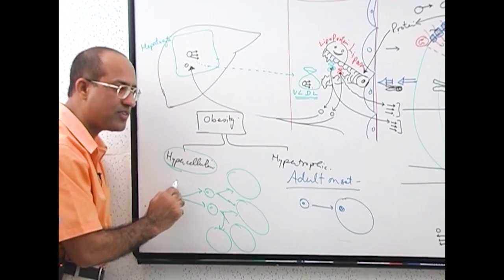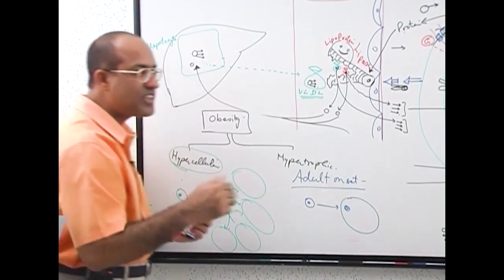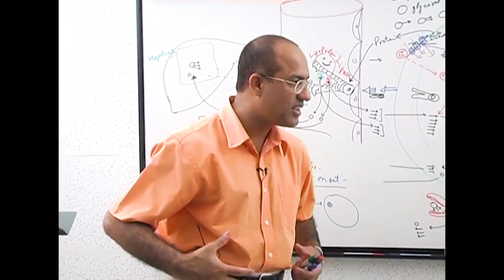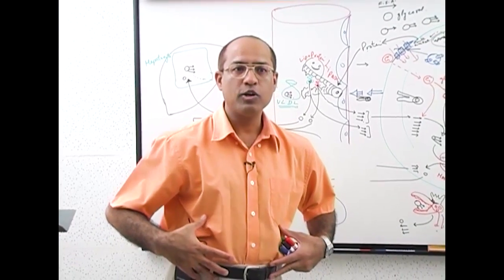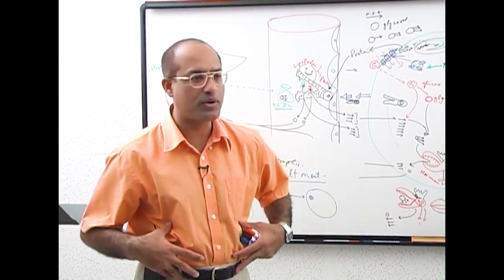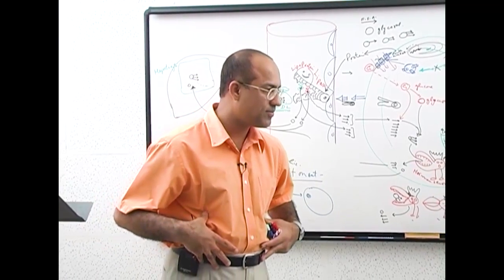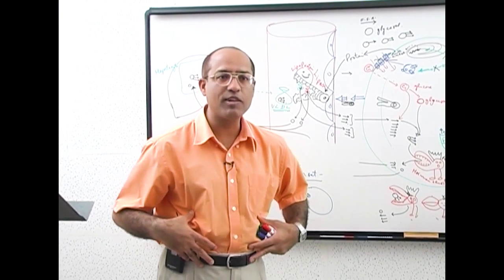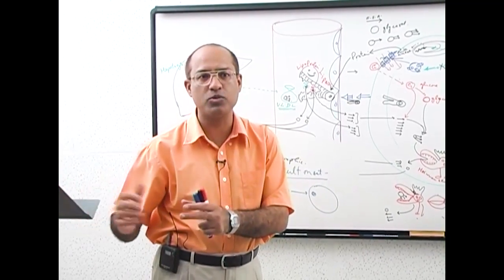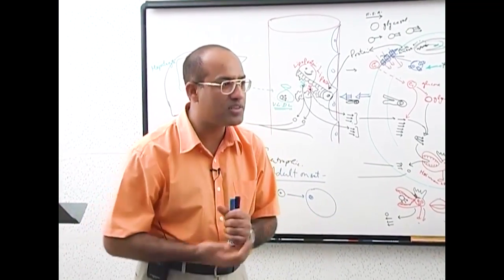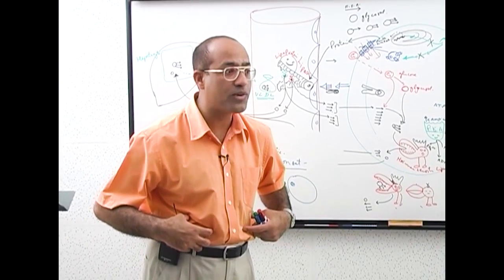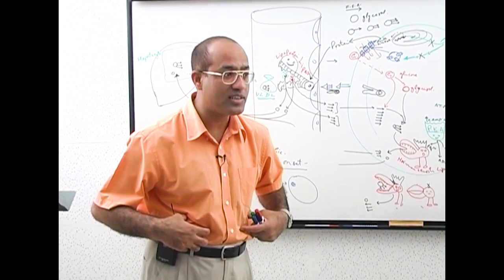This is childhood obesity. If mothers overfeed their children at a very early stage, the number of fat cells will increase. And when you have an excessive number of fat cells, all your life you have trouble controlling your weight. Fat cell number is also inherited.